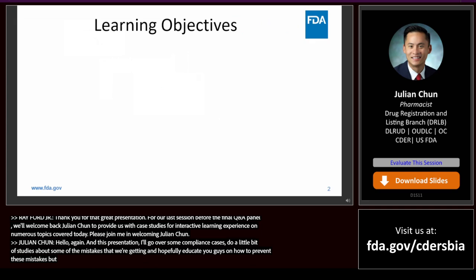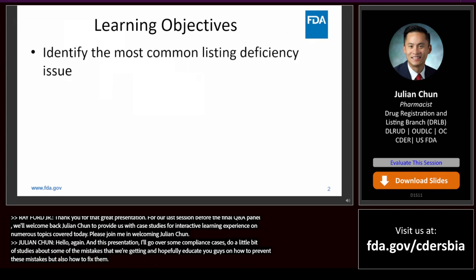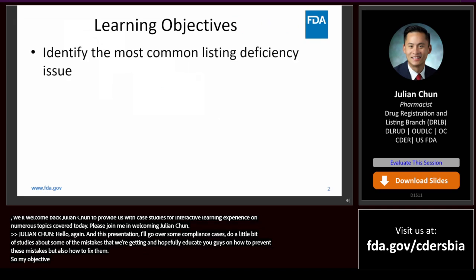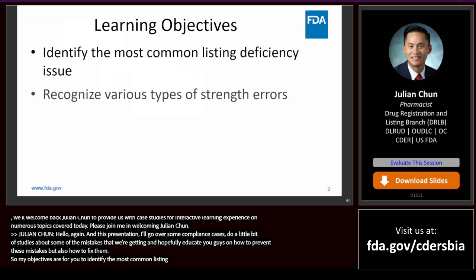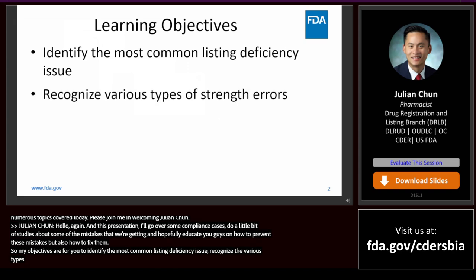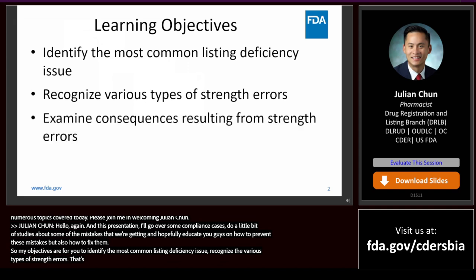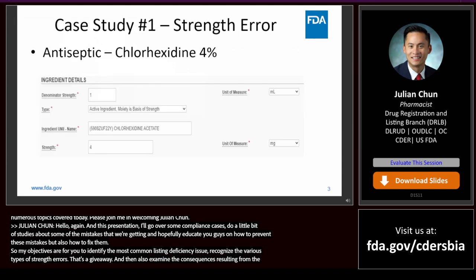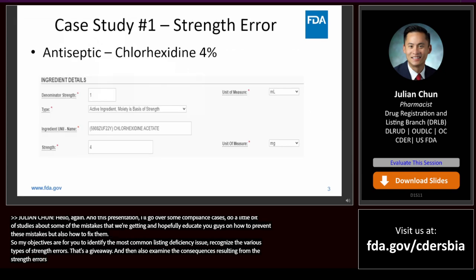My objectives are for you to identify the most common listing deficiency issue, recognize the various types of strength errors — and that's a giveaway — and also examine the consequences resulting from those strength errors.